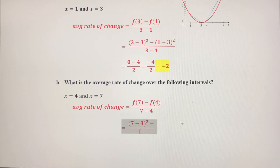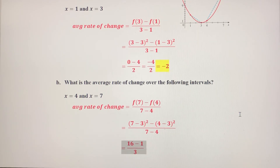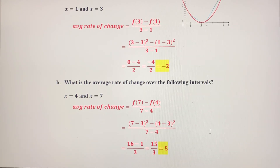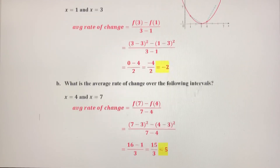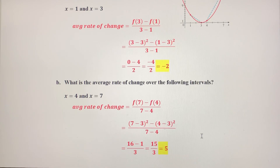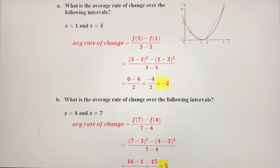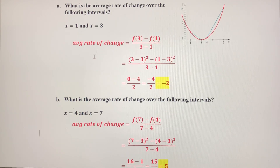That gives us (7 − 3)² minus (4 − 3)² over 7 minus 4. Cleaning up the numerator: that's 4 squared minus 1 squared, which is 16 minus 1 over 3, which is 15 over 3. The rate of change over the interval from 4 to 7 is positive 5. That should make sense — we're increasing, so the value has to be positive. That's how you find the average rate of change for a quadratic function over any given interval. You can do it from 1 to 3, 4 to 7, or any other interval.